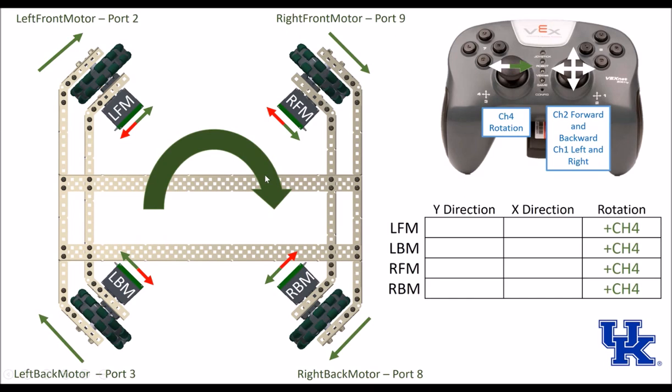When we want the robot to rotate in place — say we want it to go clockwise — what we need is our left front motor, along with all our other motors, to all rotate clockwise. In our coding aspect, the rotation is just the true value coming off of channel 4.